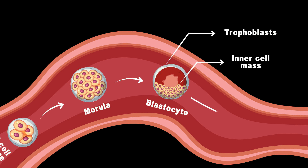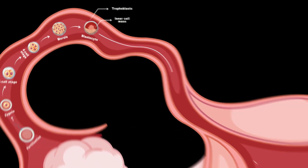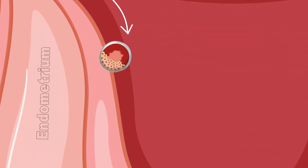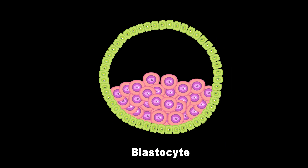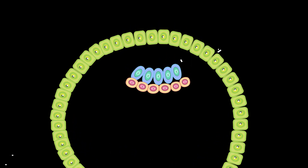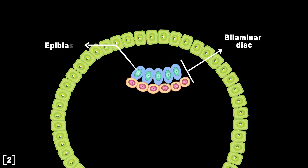Around day 6 or 7, the blastocyst attaches to and implants in the endometrium lining the uterus. The cells of the inner cell mass then differentiate into two distinct layers. The epiblast cells remain pluripotent, meaning they are capable of giving rise to any cell type in the body.